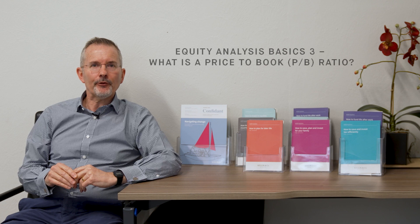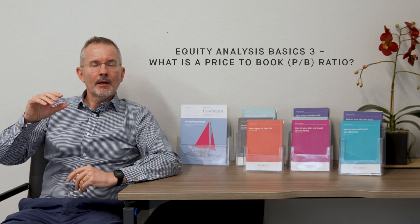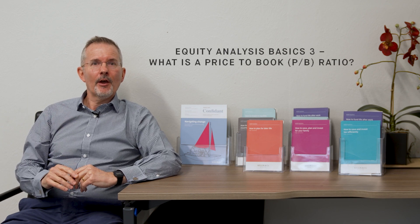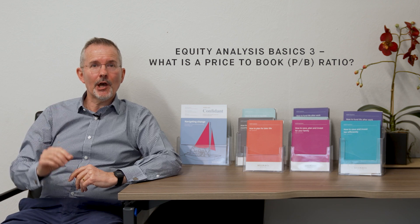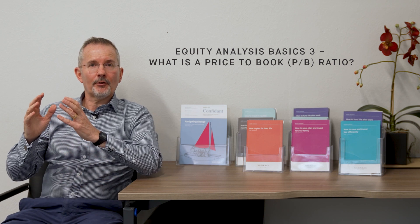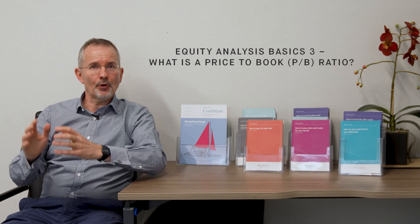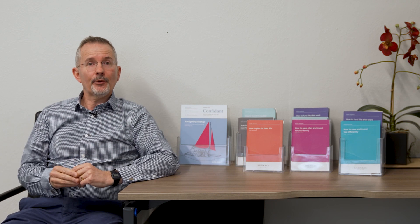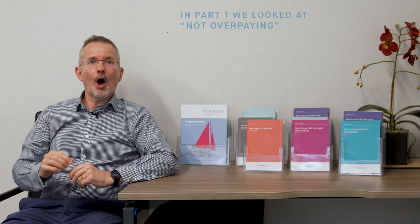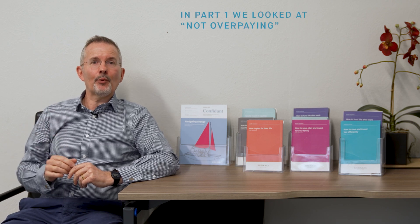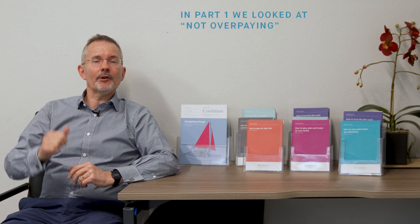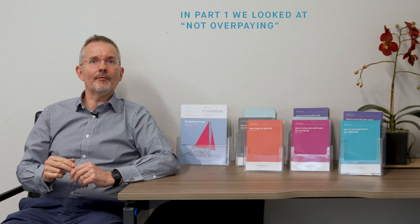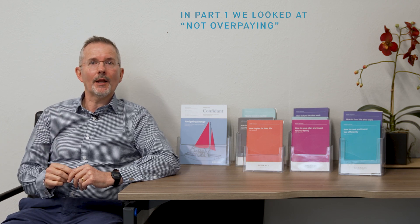Welcome to this Killick Explains video — video number three in a four-part series. Part one was 'What is equity analysis?', part two was 'What is a PE ratio?'. Here I want to look at another ratio, a balance sheet focused ratio called the price-to-book ratio, all in the interest of not overpaying for the companies we like the look of. We're looking to find good companies, not overpay, and then hold them for the long term.